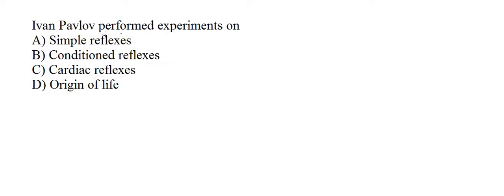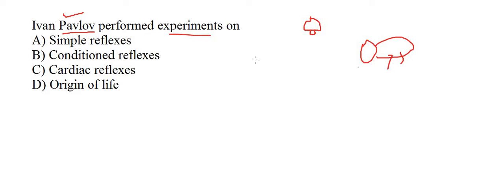Next question: Pavlov performed an experiment on which thing? Pavlov was a Russian psychologist. He had performed an experiment on a dog. He made a bell, and when he was taking food for the dog, he would ring the bell along with feeding the dog.